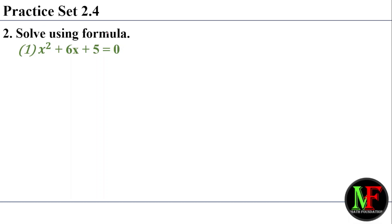Question number 2: solve using the formula. We have to find x. The formula was explained in the last video. We have to solve this example: x squared plus 6x plus 5 equal to 0.